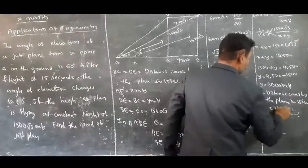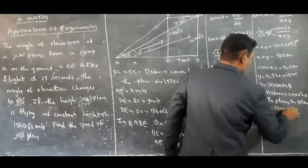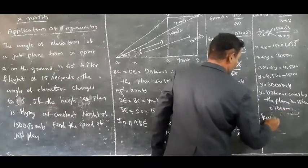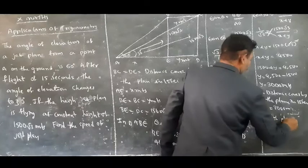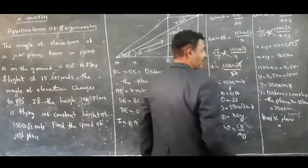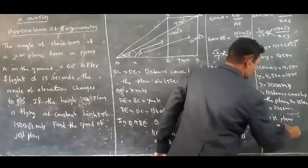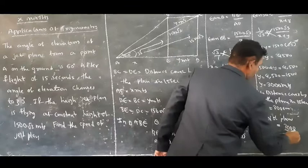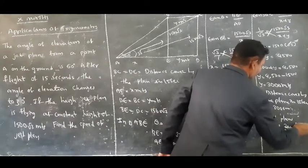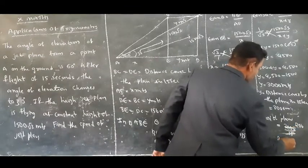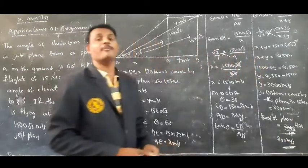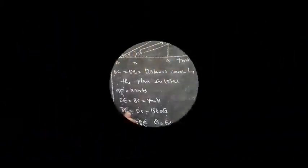Y equals 3000 meters, which is the distance covered by the plane in 15 seconds. Speed of plane equals distance over time equals 3000 over 15, so the speed of the jet plane is 200 meters per second.